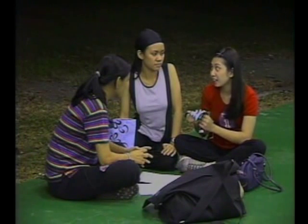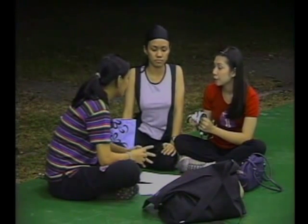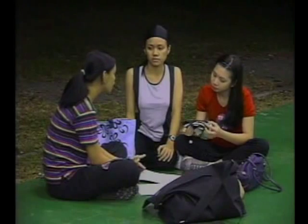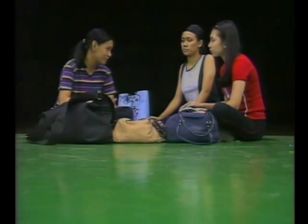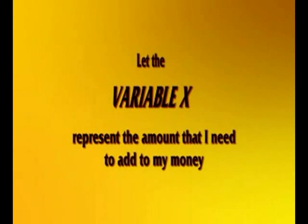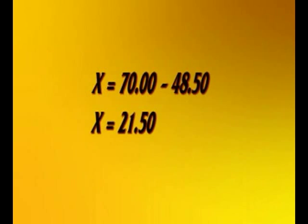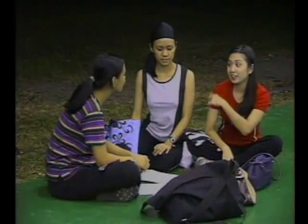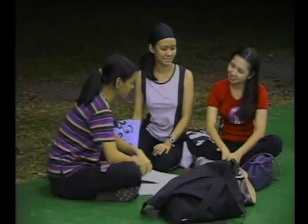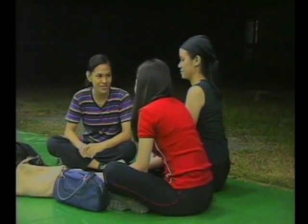Yes, but my problem now is I still can't buy this bandana. My money is not enough. How much is the bandana? 70 pesos. And how much do you have in your purse? 48 pesos and 50 centavos. Using a variable, you will know how much money you still need to be able to buy that bandana. Let X be the amount that I need to add to my money. Given 70 pesos — the cost of the bandana — minus 48 pesos and 50 centavos, which is the amount I have in my purse now. Therefore, X is equal to 21 pesos and 50 centavos. That is the amount you will add to your money now — and that is how much you will lend me so I can buy the bandana. No problem with that, Angela. I want you to look your best during the dance festival. Let's do a couple more examples and then we go. I'll even help you with your assignment.